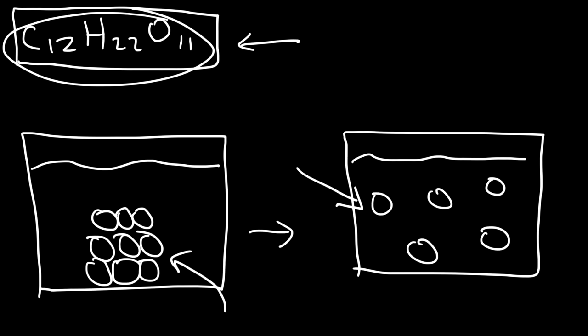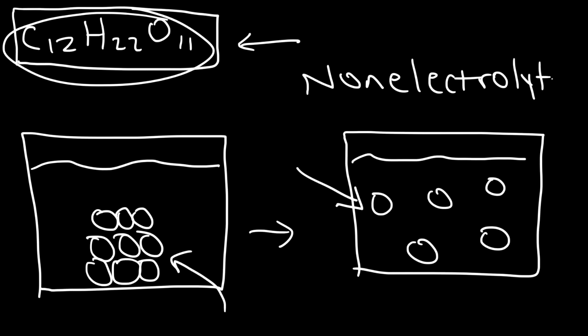So sugar doesn't ionize. If you try to pass electricity through it and see if the light bulb is going to light up, it won't. Therefore it's a non-electrolyte — it dissolves in water but it doesn't ionize and does not conduct electricity. If there are no free-flowing ions in water, water will not conduct electricity.